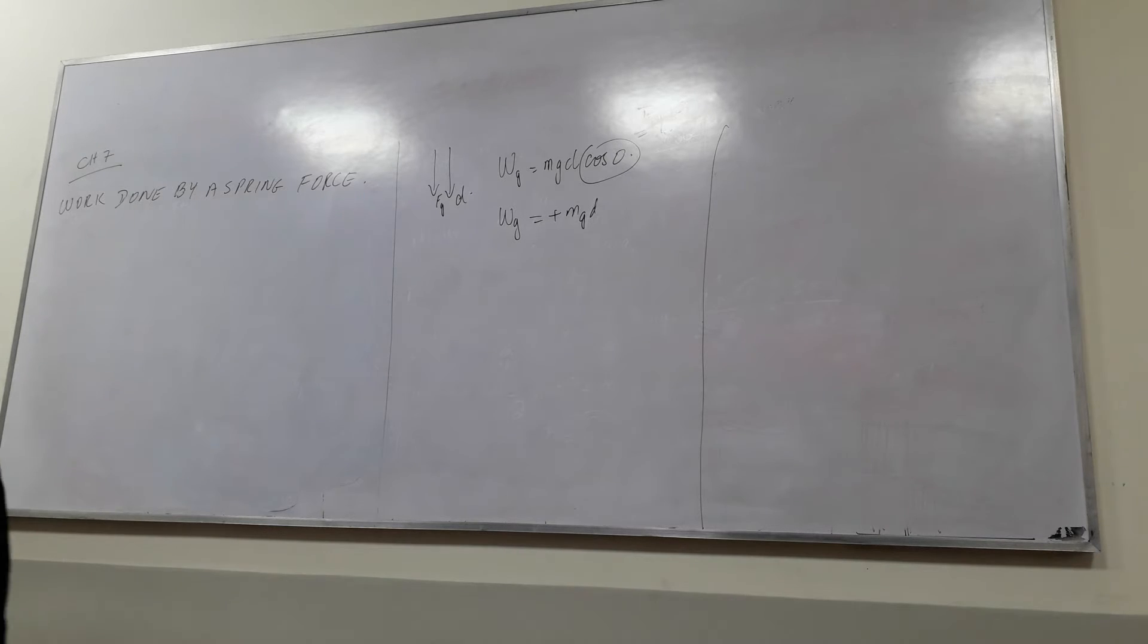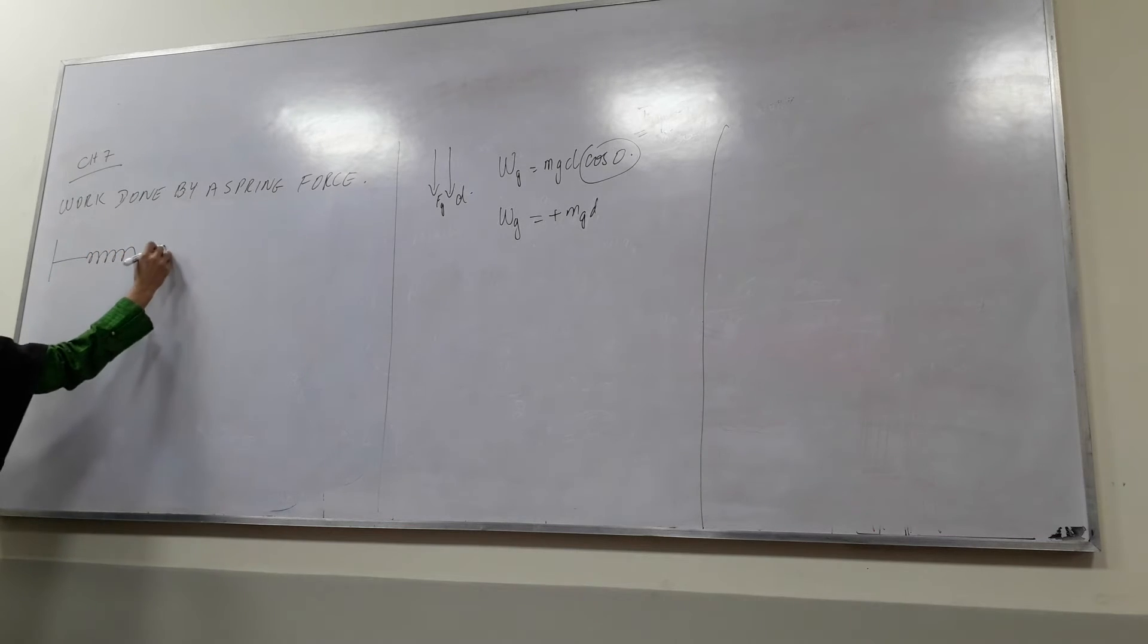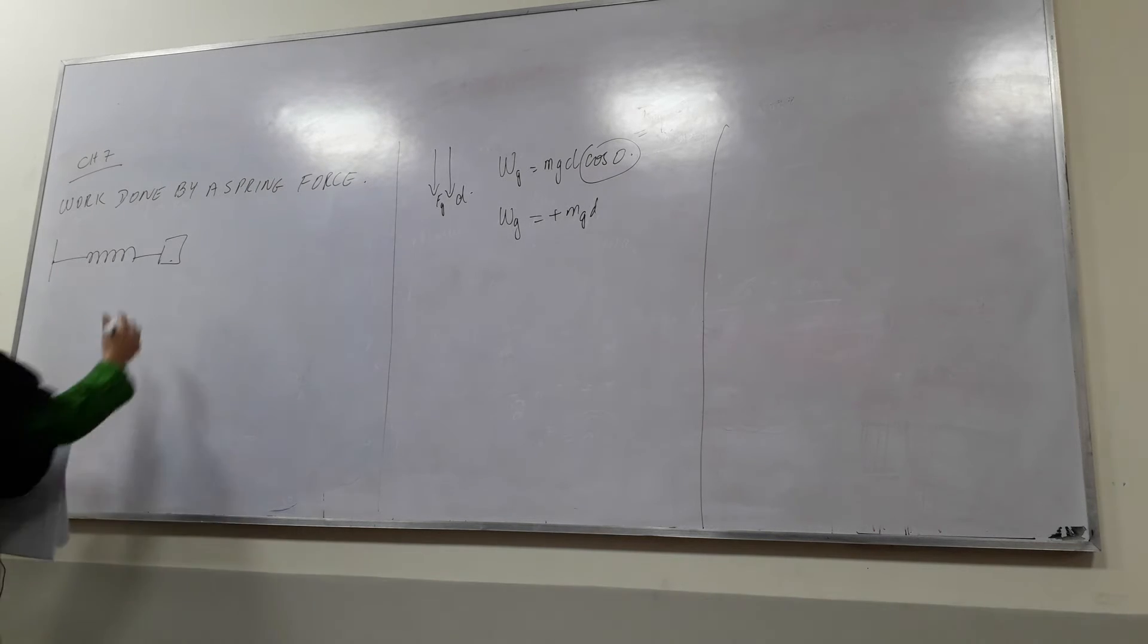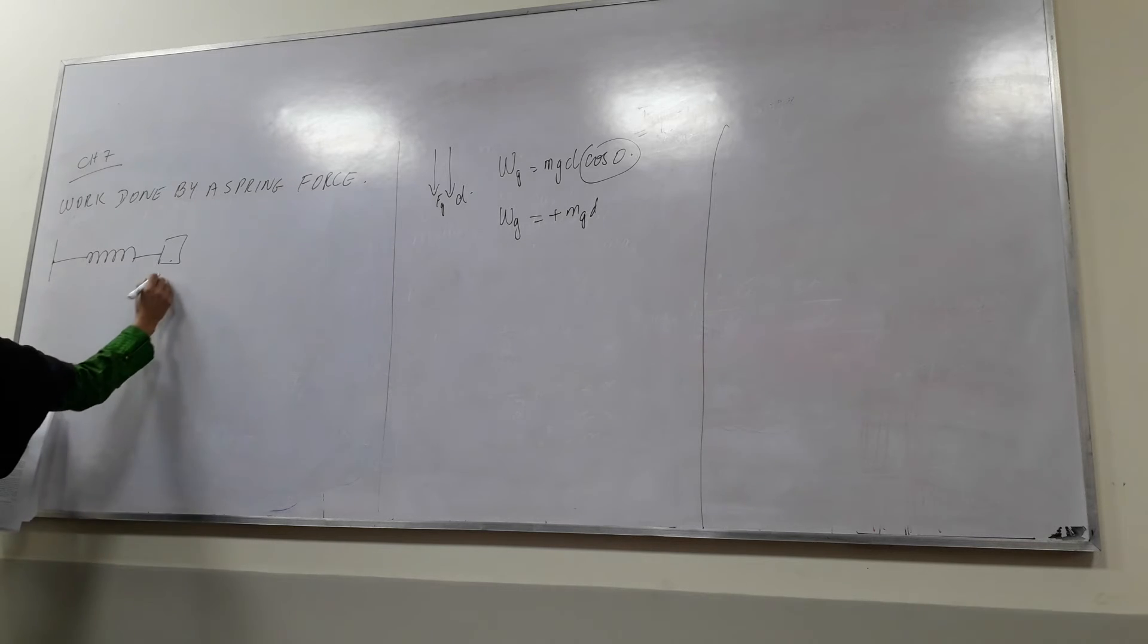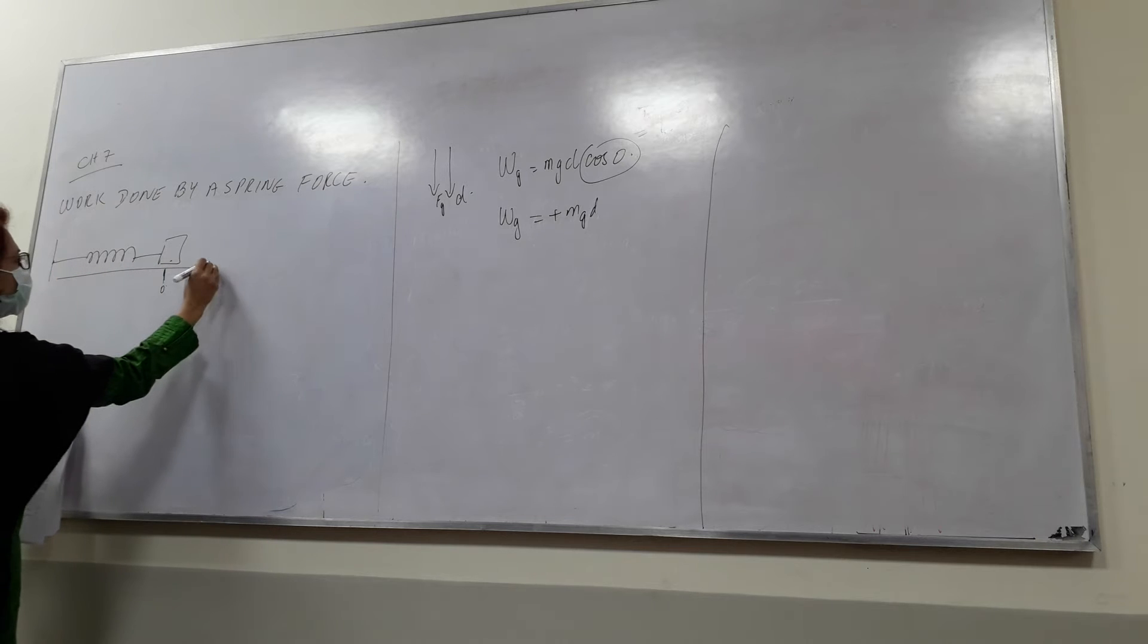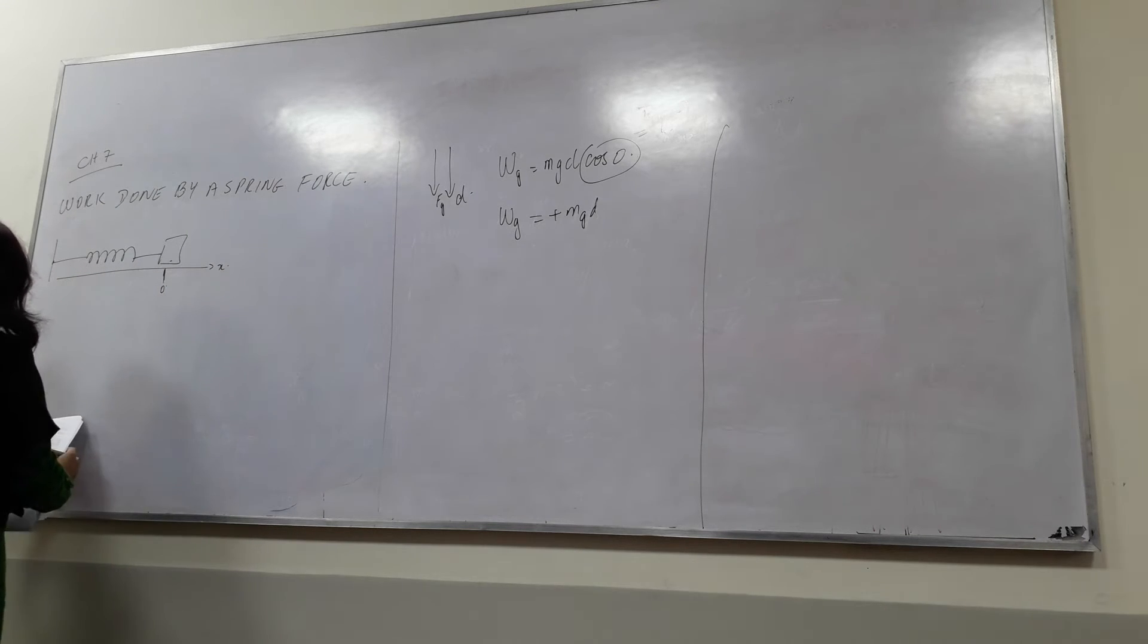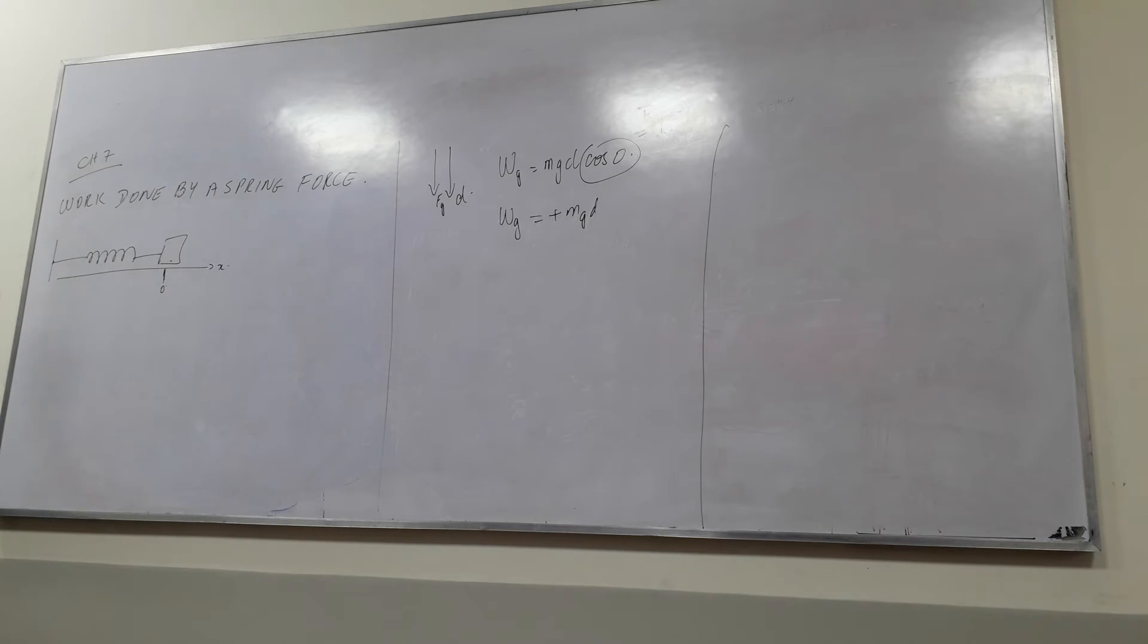Okay, so we have to understand it. Spring force, very simple example we give is you have a spring and you have a mass attached to a spring. Okay, so the spring is fixed on one side, you can imagine it's fixed with the wall. This is a block attached. Let us say this is the initial position of the block, let's say this is the zero position, and this is the x direction, x axis, and this is your block. Now when you pull a spring, what happens?